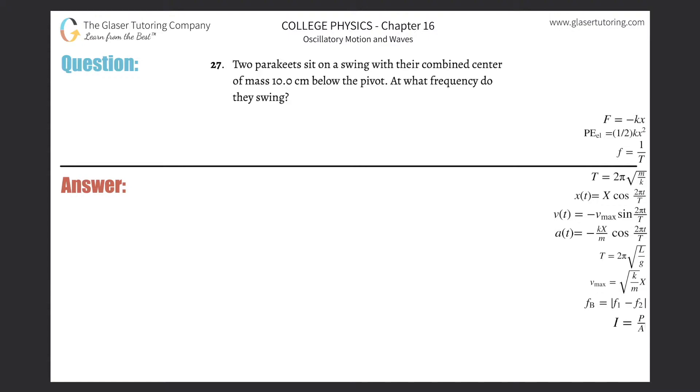Number 27: Two parakeets sit on a swing with their combined center of mass 10 centimeters below the pivot. At what frequency do they swing? Check out number 25 where I talked about center of mass and below the pivot point. Instead of repeating it exactly, just check out number 25—it's a short video. Basically, we're talking about them swinging.